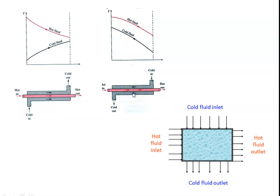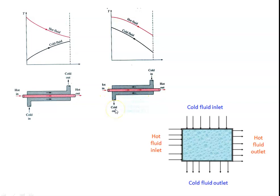Both hot and cold fluid are flowing in the same direction, which is why it is called a parallel flow heat exchanger. In the counter flow heat exchanger, the hot fluid enters on the left side and leaves on the right side, whereas the cold fluid enters on the right side, flows in the opposite direction of the hot fluid, and leaves on the left side. The two fluids flow in opposite directions — that is why it is called a counter flow heat exchanger.